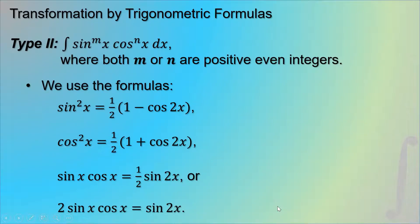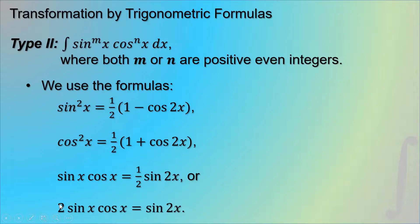The second type is when we integrate sinᵐx · cosⁿx dx where both m and n are positive even integers. We use the half-angle and double-angle formulas: sin²x = ½(1 − cos 2x), cos²x = ½(1 + cos 2x), and sin x · cos x = ½ sin 2x, or equivalently 2 sin x cos x = sin 2x.